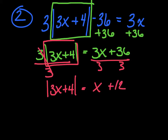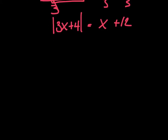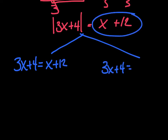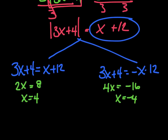Now we stem our two equations. Leave the first alone: 3x + 4 = x + 12. Negate the whole right side for the second: 3x + 4 = −x − 12. Pause it, solve it, and check. Solving both equations, I get x = 4 and x = −4.